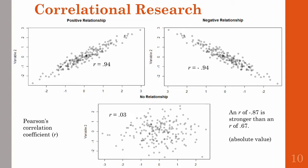A negative relationship, shown in the top right figure, is pretty much the opposite — increases in one variable are related to decreases in the second variable. This is shown by values starting high in the top left and moving down towards the bottom right. And finally, if there's no relationship between the variables, the dots in the scatter plot should look like a big blob with no discernible pattern at all.